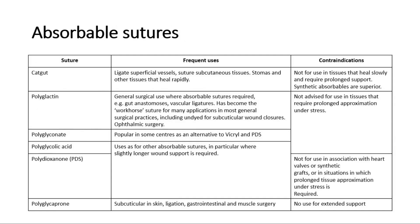That's for non-absorbable sutures. Next I will talk about absorbable sutures. This is a summary table for absorbable sutures. For contraindications, most of them are not advised for use in tissues that require prolonged approximation under stress. For uses: first is catgut, which is used to ligate superficial vessels and suture subcutaneous tissues. Second is polyglactin, for general surgical use where absorbable sutures are required, such as gut anastomosis and vascular ligatures.